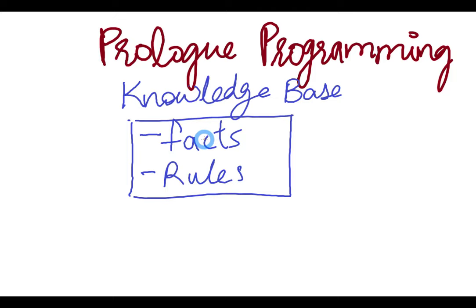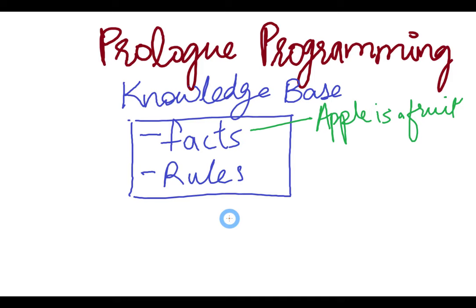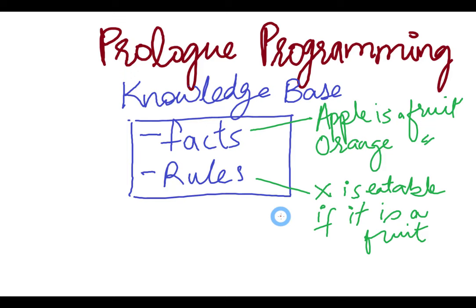Facts are different statements that are true, and rules are different statements that are based on facts. For example, a fact can be 'apple is a fruit' and another fact can be 'orange is a fruit.' An example of a rule can be: anything X is eatable if it is a fruit. So these two are facts and this is a rule. Based on these facts and rules, we make different queries from this knowledge base.